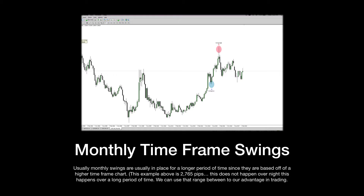It takes one month for a level to form, and then it trades away for a month. If you look at this example and count, that's nine months worth of price action in between those swings. In between the swing high and the swing low, it creates a trading range.